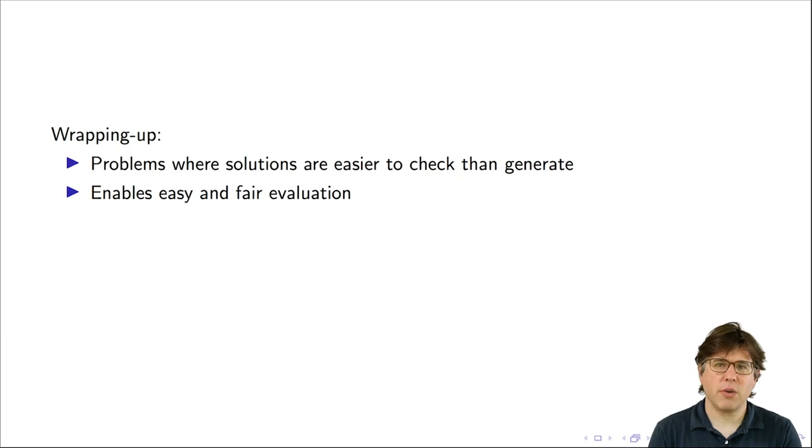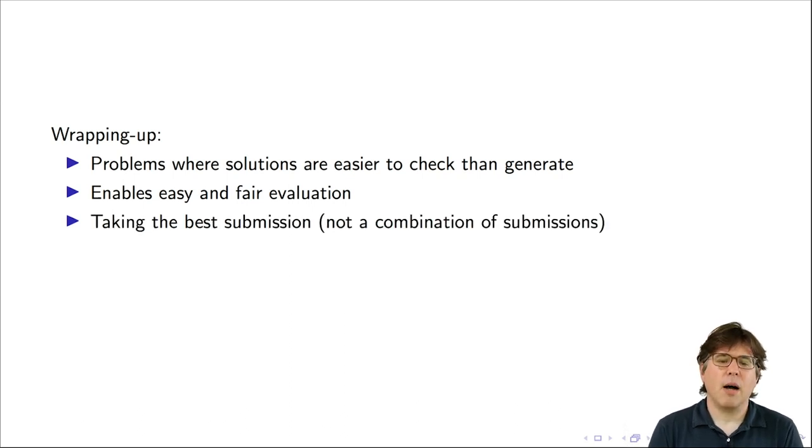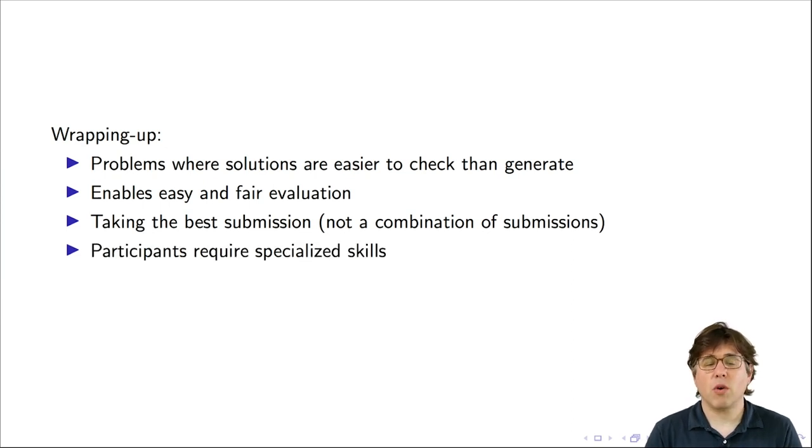This enables easy and fair evaluation. So we saw the blog post about the singular value decomposition that was able to be instantly recognized as an important contribution. It's also the case that some of the best Foldit players are people who have no formal training in biochemistry. They're people who enjoy doing puzzles online. In all these cases we take the best submission. So there was a winner of the Netflix prize. And also in Foldit they look for the lowest energy configuration. They don't take the average of all the solutions that were submitted by participants. And it requires specialized skill. So to be able to create an algorithm to win the Netflix prize requires specialized skill. To be able to play Foldit and find the low energy configuration requires specialized skill although not necessarily formal scientific credentials in either of those cases.